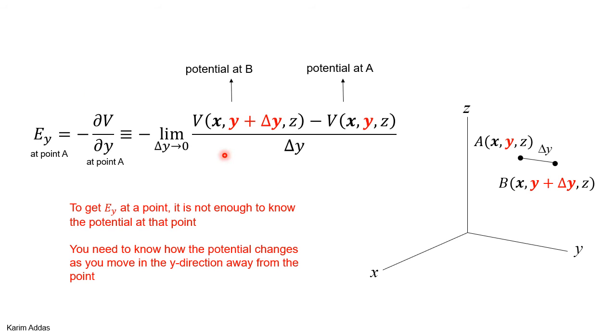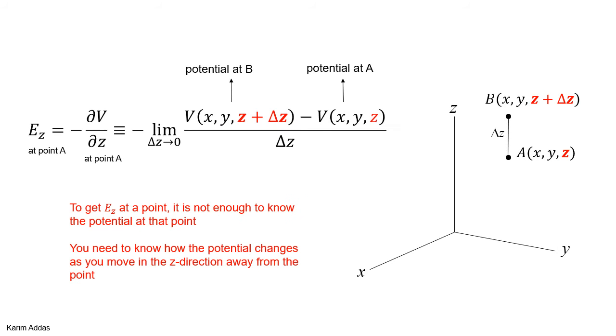To get Ey, you get minus partial V by partial y. So you need to know how does the potential change when you go in the y direction? You get Ez, you get minus partial V by partial z. You need to know how the potential changes in the z direction. And remember, any function of x, y, and z, it doesn't have to change the same way when you go in the z or in the y or in the x. It could have different way of changing in different directions. So Ex won't turn out to be the same as Ey, won't turn out to be the same as Ez in general.